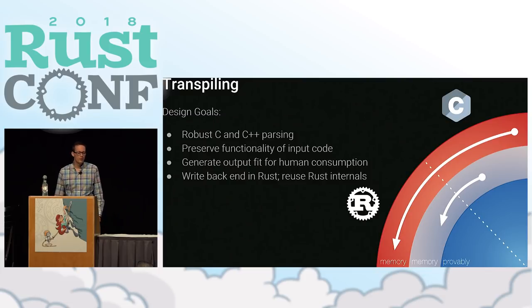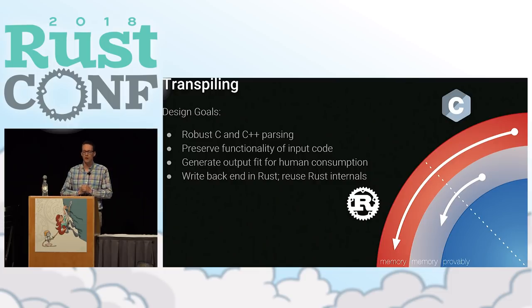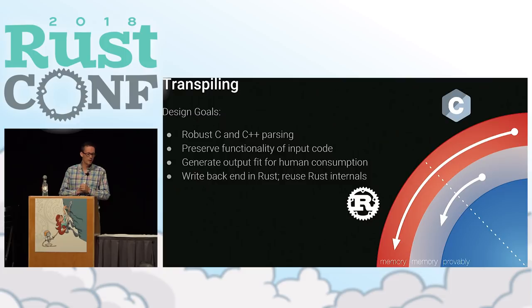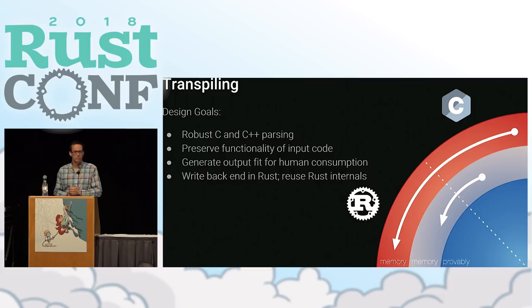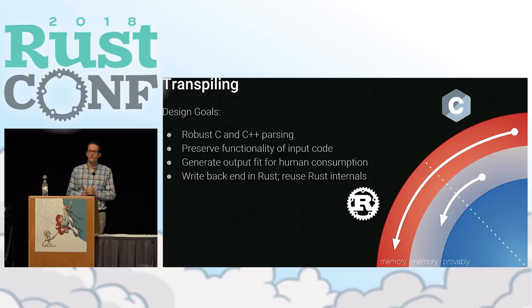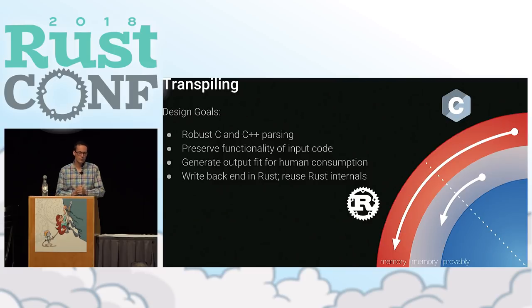The things we wanted to accomplish with our transpiler — we have some unique goals partially informed by the experiences of others who built transpilers before us. We wanted to do robust C and C++ parsing: we basically want to handle more than hello world, and we want to be able to take huge and crusty old C code bases and parse them. We also want to preserve the functionality of that code, because it's most likely well tested, especially if you care enough about it to move it into Rust.